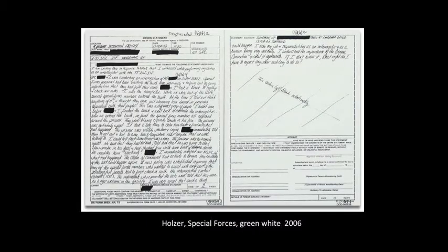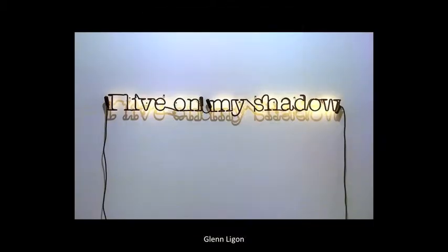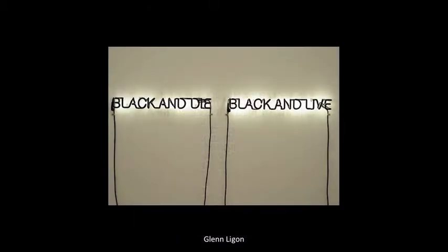In one particularly moving series, Holzer reproduced letters from soldiers, their families, and the families of POWs in the Afghan war, which had been declassified by the U.S. government, but showed a side of the war not seen by the American people. Glenn Ligon uses text and image to confront the viewer with his experience of being a dual minority in America — that of being African American and gay. His work draws on the subtext and hidden meanings in the history of being Black in America, as well as the prejudice against homosexuality.